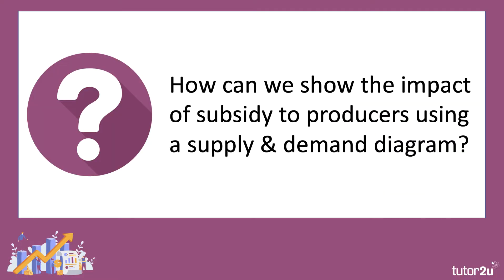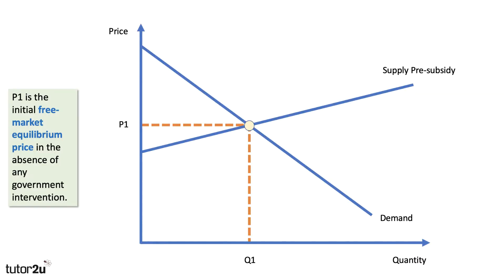So how can we show the impact of a subsidy to producers using a supply and demand diagram? Well here's our diagram. P1 is the initial free market, market-clearing equilibrium price in the absence of any government intervention. So consumers pay P1 and the output bought and sold is Q1.